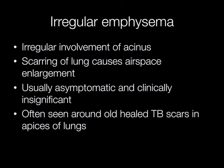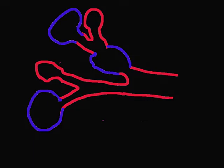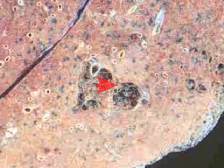Irregular emphysema is usually clinically insignificant, but it is probably quite a common type of emphysema as it occurs around scars and areas of fibrosis in the lung. One of the common sites is in the apices of the lungs around old healed TB scars. Irregular emphysema is so called because of the irregular involvement of the acinus. This is a typical example of the appearance of irregular emphysema.